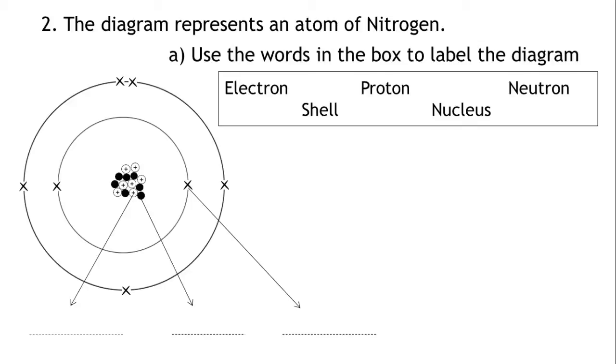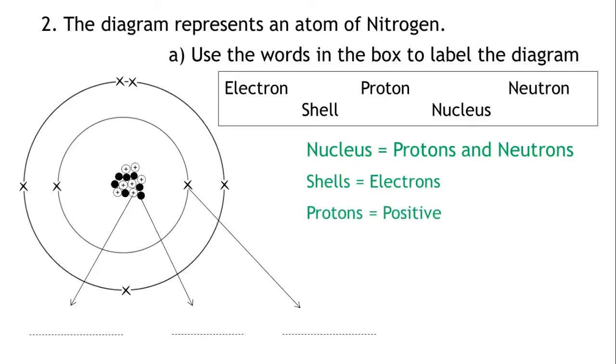So let's write down what we know about an atom. An atom has a nucleus which is made up of protons and neutrons. This is surrounded by shells and in these shells we find electrons. Protons are positive, electrons are negative, and neutrons are neutral.